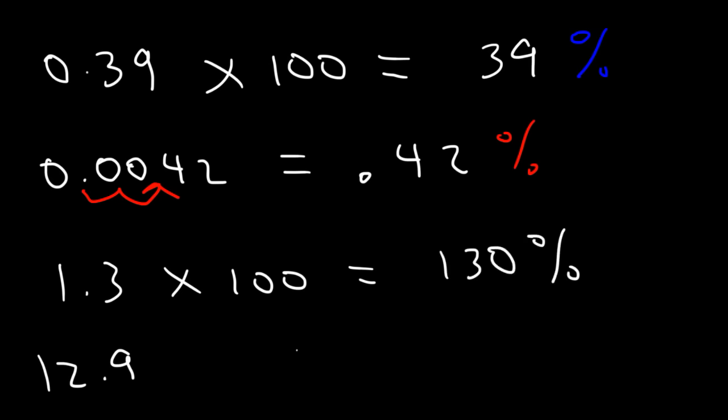And for the last example, I'm going to multiply by 100 again. 12.9 times 100 is 1,290.